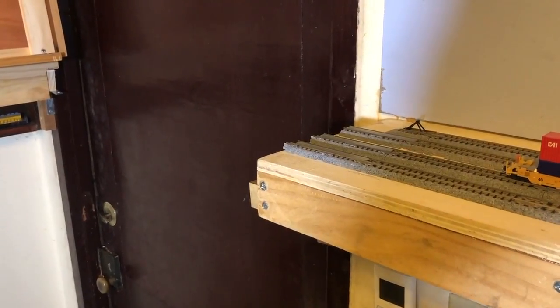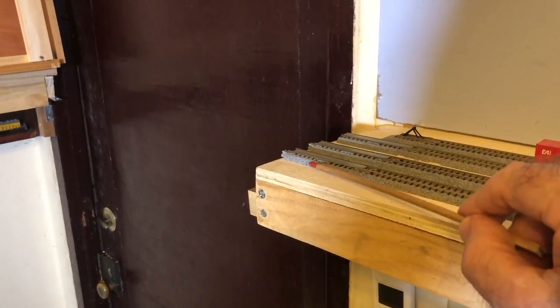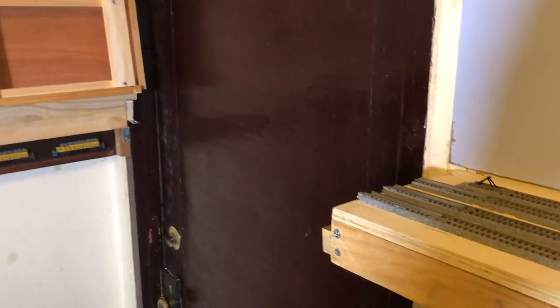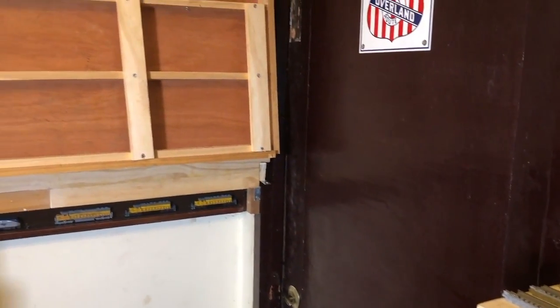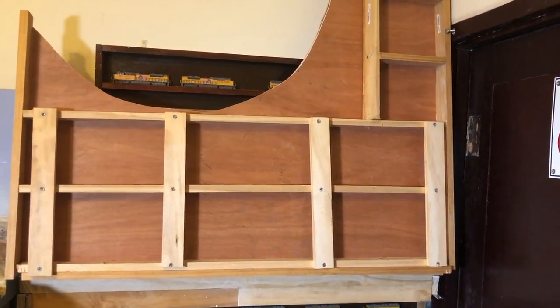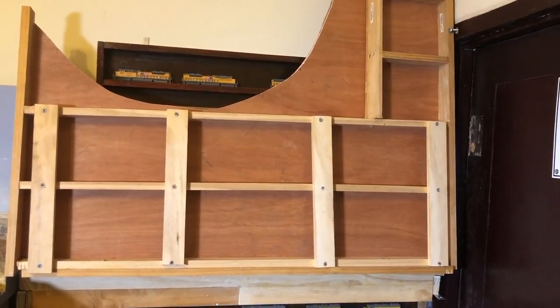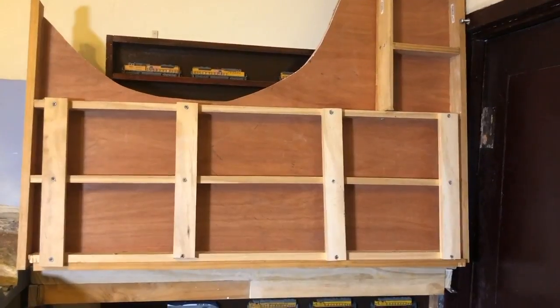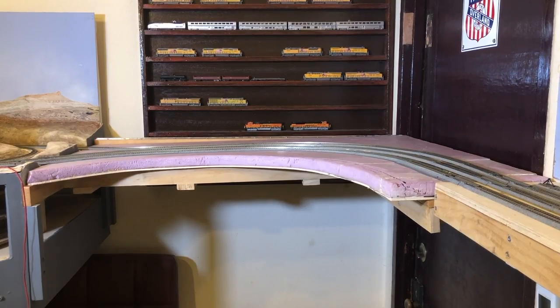Originally, the bench work for Pocatello ended here. But I had a carpenter reverse the door to the room so that it now swings out into the hallway instead of into the train room. Once I did that, I could build a drop-down bridge.